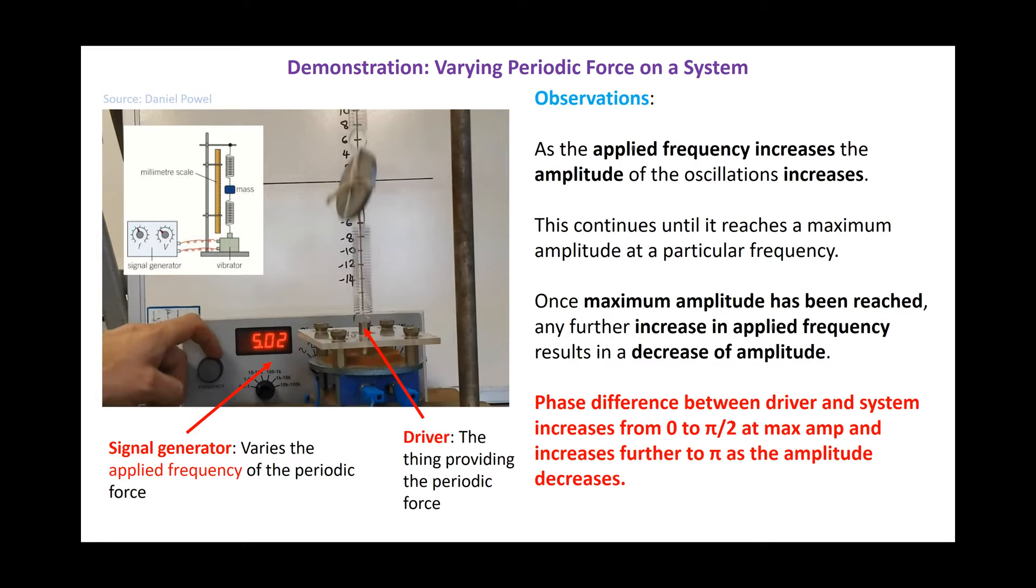As the system is approaching the maximum amplitude, you get a phase difference between the driver here and the oscillation of your system. From minimum amplitude all the way up to the maximum, it will increase from 0 to pi over 2. And it will be pi over 2 phase difference at maximum amplitude. As you go beyond this maximum amplitude, as the amplitude starts to decrease again, this phase difference increases further from pi by 2 to pi.